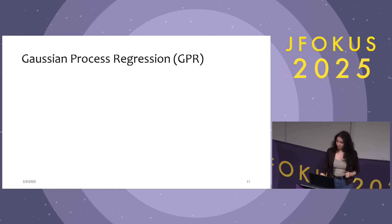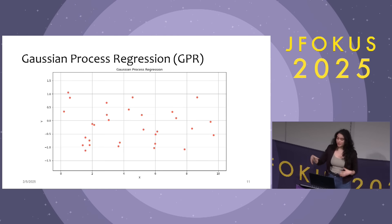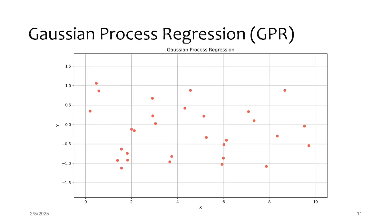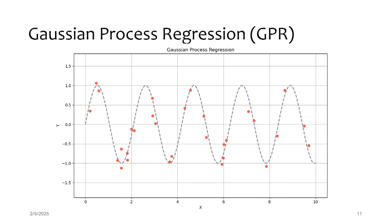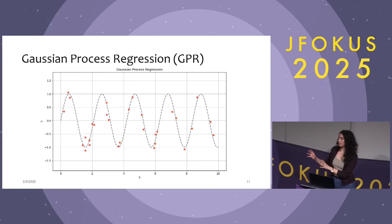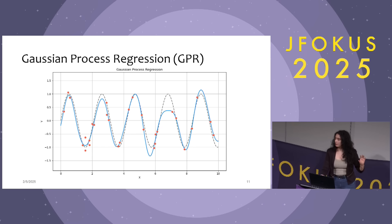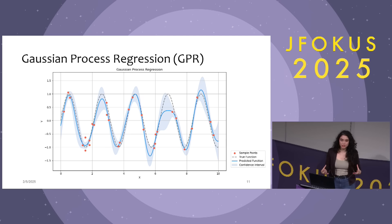Now let's see this with an example. Imagine these red dots in the graph represent some observed data, which corresponds to the values extracted from the GC log in our case. The dashed black line represents the true but unknown function. Our goal is to find patterns within our data and predict the young generation size that optimizes performance. But as mentioned, there are infinitely many potential functions that could fit this red data. Gaussian process regression calculates a confidence interval — the cloud of curves where the true function is most likely to lie — based on the observed data and the assumption of an underlying Gaussian distribution. The blue line represents the most likely function, and the shaded area around it represents the confidence interval, or the range where the true function is most probably located.